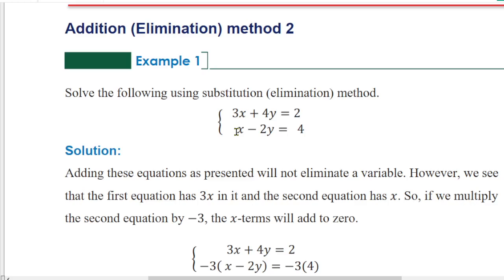x is equal to y. 4y is equal to minus 4y. If you see the positive 2, the y is equal to x, the x is equal to y. So the x is equal to 2.